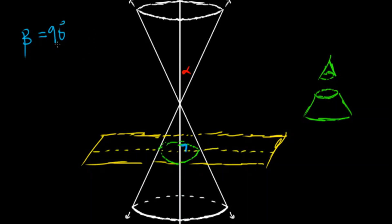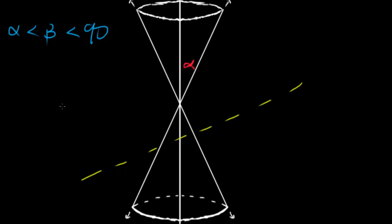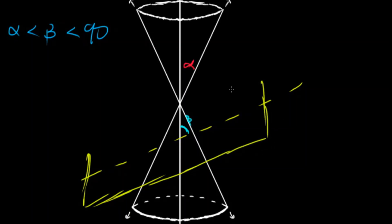Now let's change beta to something less than 90 but greater than alpha. I need to cut this cone at an angle that is less than 90 but also greater than alpha. This dotted line makes an angle greater than alpha but also less than 90 — this angle right here is beta. And now constructing the plane, we are getting an elongated circle, and this is an ellipse.